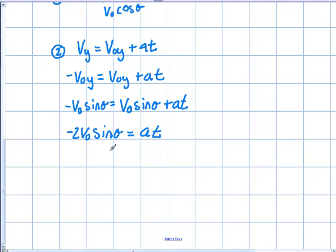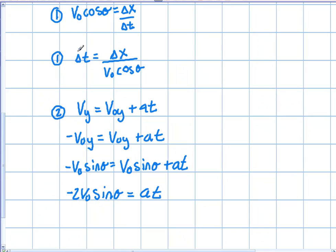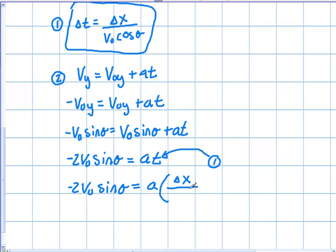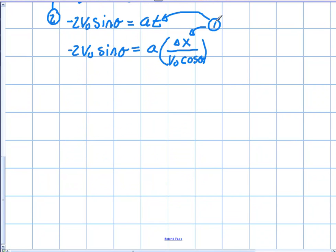Now I'm going to go back to Equation 1 — where we solved for Δt — and substitute it into Equation 2. Taking the Δt from Equation 1 and substituting it in, we get: negative 2v₀ sinθ equals a times Δx over v₀ cosθ. That is the result of substituting Equation 1 into Equation 2 — a combination of both equations.